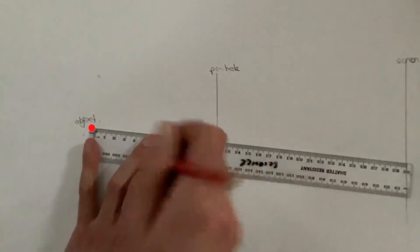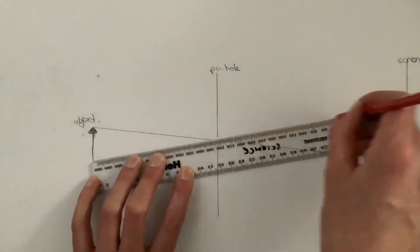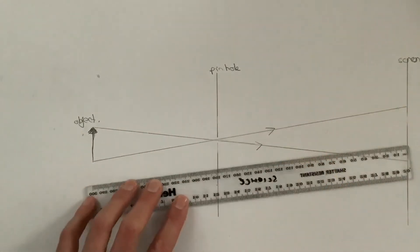First of all, from the top of the object, passing through the pinhole. And then from the bottom of the object, passing through the pinhole.